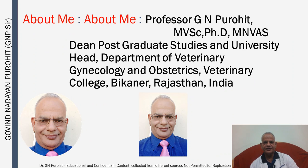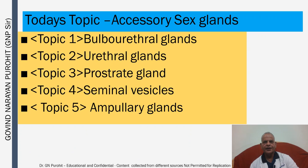I am Professor G.N. Purohit, Dean Postgraduate Studies and Head, Department of Veterinary Gynecology and Obstetrics, College of Veterinary and Animal Science, Bikaner, Rajasthan, India. So today we discuss about the accessory sex glands. Topic 1 would be Bulbourethral Glands, Topic 2 Urethral Glands, Topic 3 Prostate Gland, Topic 4 Seminal Vesicles, and Topic 5 Ampullary Glands.